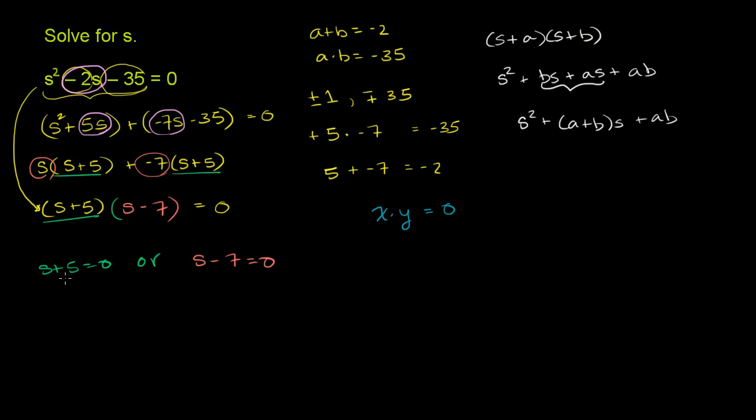Now, if s plus 5 is equal to 0, we can subtract 5 from both sides, and you get s is equal to negative 5. If s minus 7 is equal to 0, you can add 7 to both sides, and you get s is equal to 7.